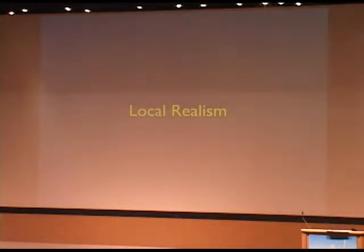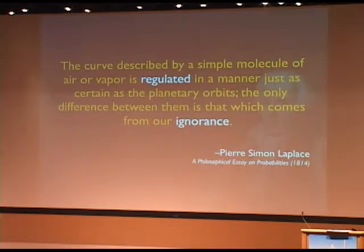In a loophole-free Bell test, what are we testing? We're testing this notion that's sometimes called local realism. I'm going to give you an example of this. I haven't apparently learned Ronald's example of quoting famous physicists, so you're going to get a couple of quotes throughout my talk. I apologize in advance. The first comes from Laplace. He's got this wonderful philosophical essay on probabilities from 1814. He says, the curve described by a simple molecule of air or vapor is regulated in a manner just as certain as the planetary orbits. The only difference between them is that which comes from our ignorance.